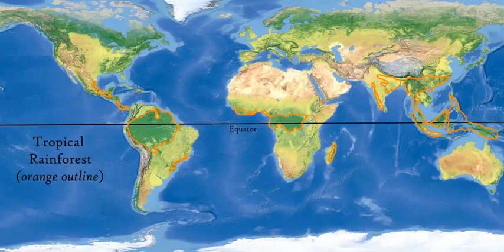Next will be across the equator, which would be our tropical rainforests. Now there are some areas not on the equatorial region which are tropical rainforests. However, the majority of the major rainforests are directly over the equatorial regions, over the equator — so the Amazon, the Congo, and the rainforests of Southeast Asia, Indonesia and Malaysia.